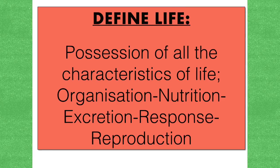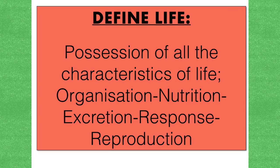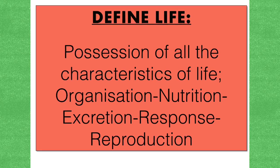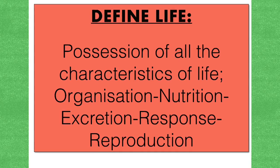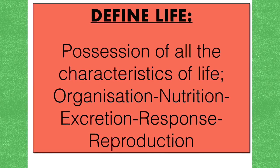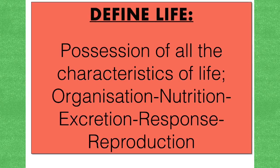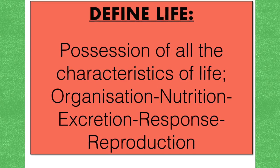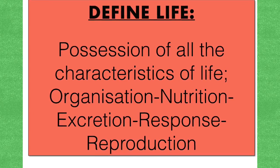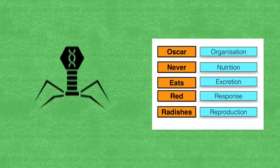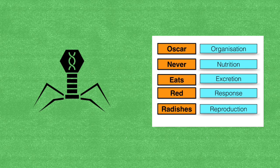By knowing those five characteristics of living things, you can define life. Life means the possession of all the characteristics of life: organisation, nutrition, excretion, response, and reproduction. Knowing the characteristics of living things will allow you to argue if something is living or non-living, and this is very important for when you encounter viruses.